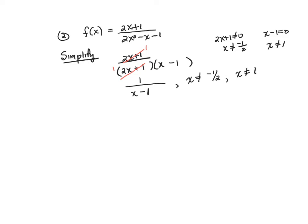To simplify, we divide through the common factor of two x plus one. In simplest form, this becomes one over x minus one. But we must write the restrictions: x is not equal to negative one-half, and x is not equal to one. When we graph this rational function, something will happen at both of these x values.